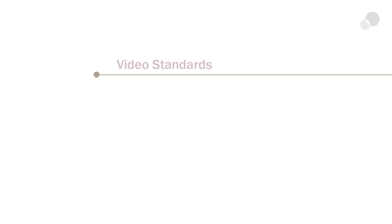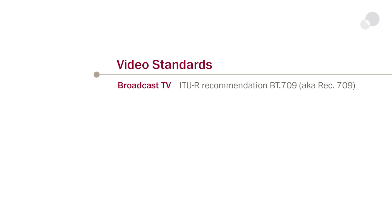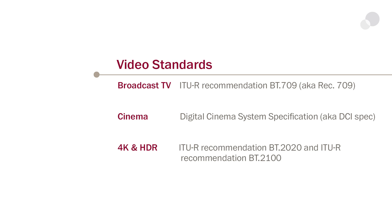When we talk about video standards, we talk about Rec. 709 for broadcast TV, we talk about the DCI spec for cinema, and in the last two years or so, we've heard about 4K UHD and HDR standards — that's Rec. 2020 and Rec. 2100.